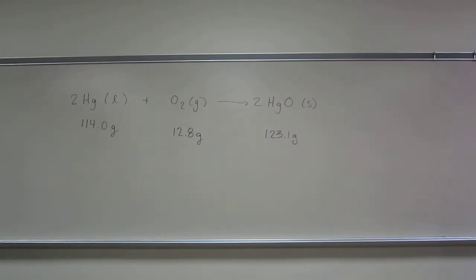So it says, a sample of mercury with a mass of 114.0 grams was combined with 12.8 grams of oxygen gas, and the resulting reaction gave 123.1 grams of mercury 2-oxide.